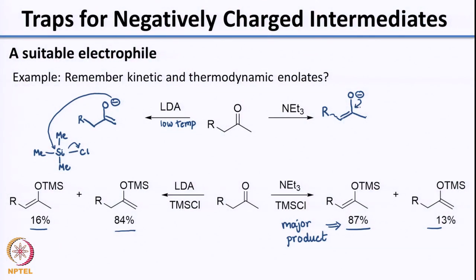Now I have a question for you: when you add TMS chloride, why does the oxygen center actually interact with TMS chloride? Remember when we looked at the mechanism of the aldol reaction — once you draw the enolate, you push the arrow and show the electrons coming from carbon, and then you have the reaction to a carbonyl to give you the aldol product. Whereas in this case, you see the oxygen actually interacting with the silicon because you have 2 nucleophilic centers — oxygen and carbon. So why does carbon interact in the aldol case and oxygen interacts with TMS chloride? I want you to think about this question.